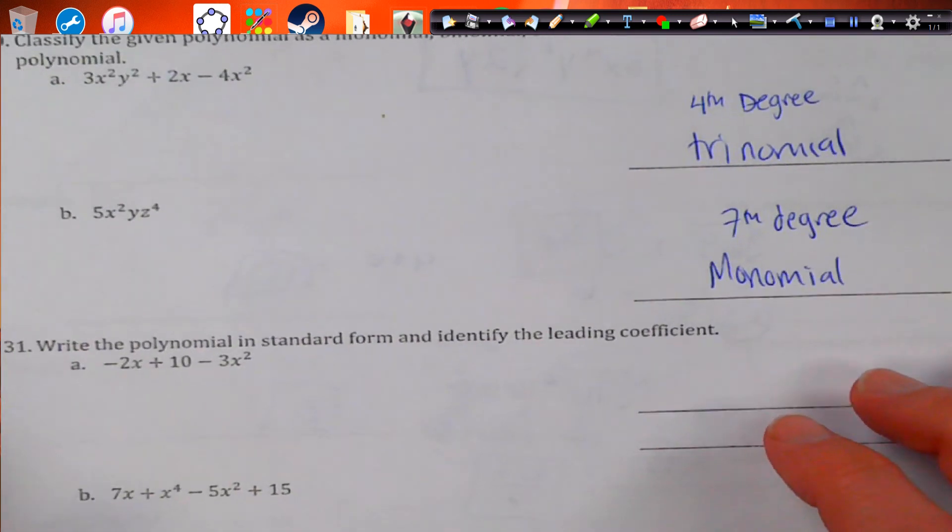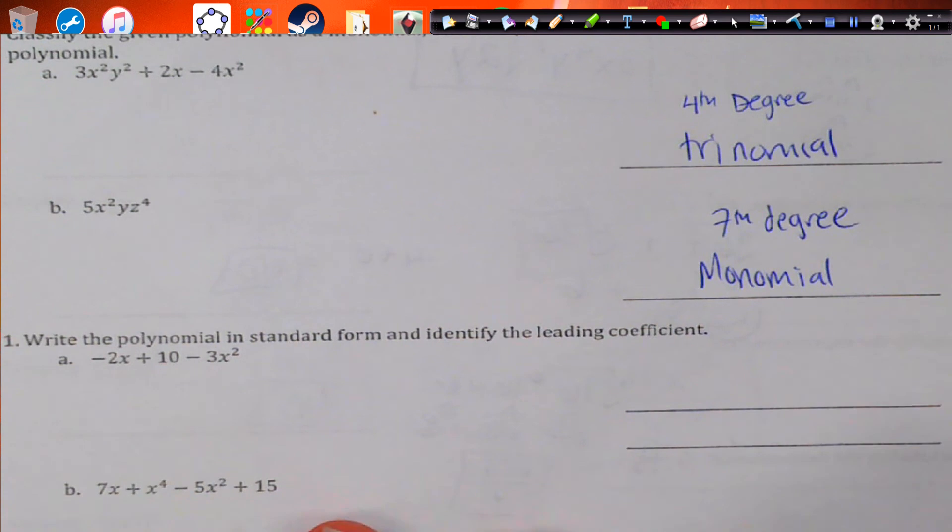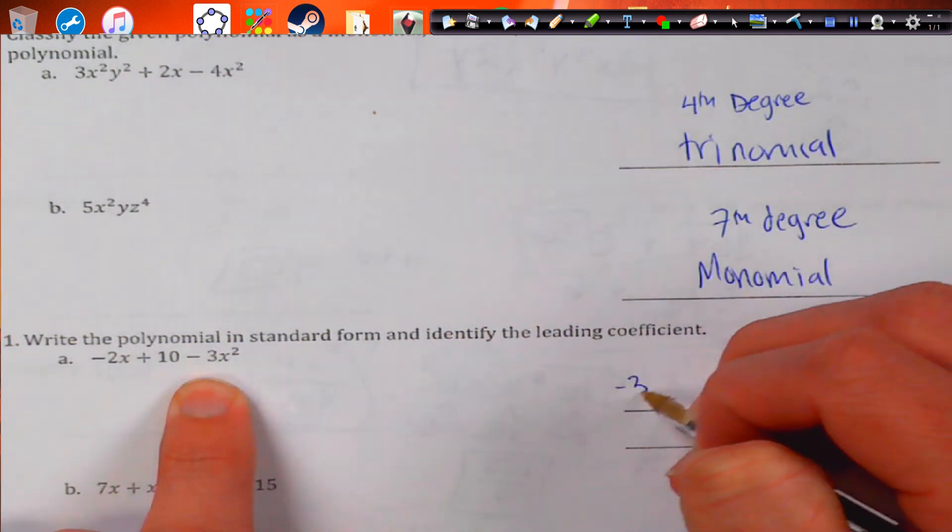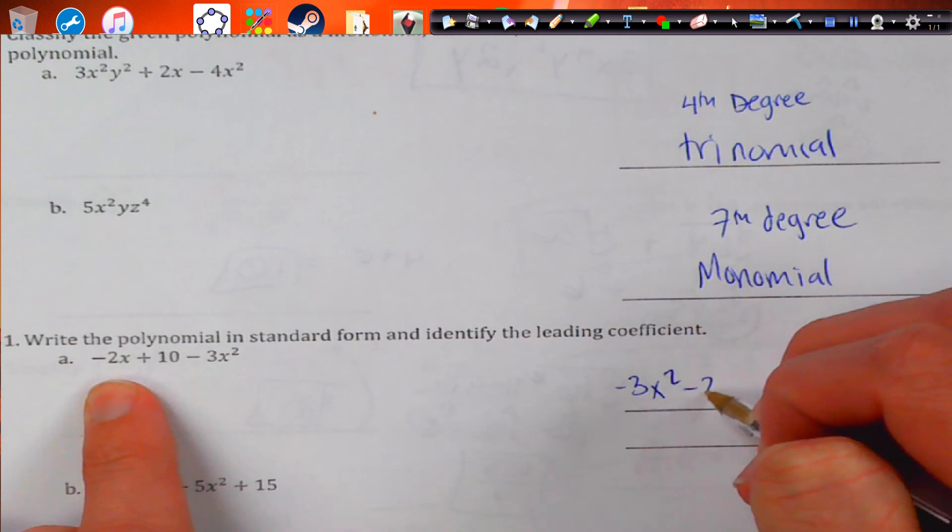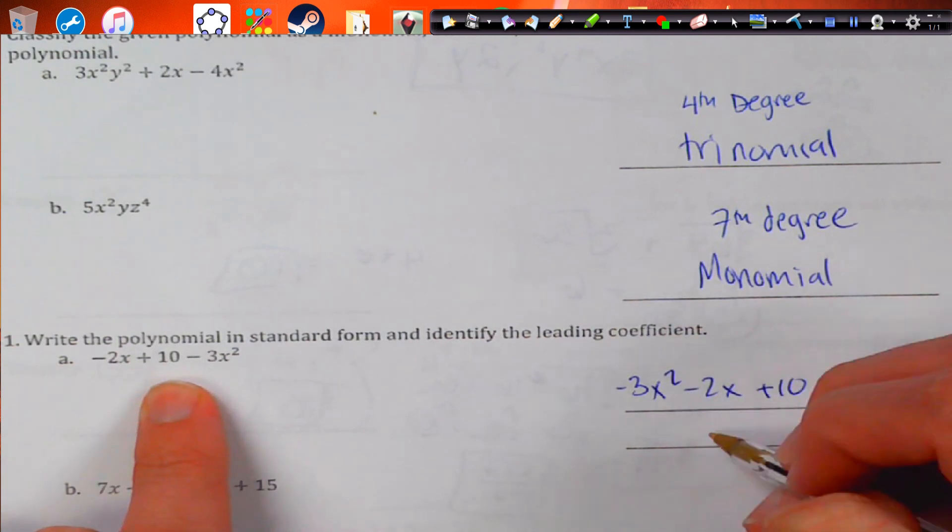Write the polynomial in standard form and identify the leading coefficient. So standard form, we want to put this guy in front. So that's negative 3x squared. And then we go negative 2x, and then plus 10. And the leading coefficient is going to be negative 3.